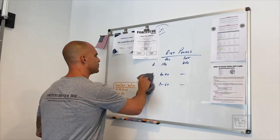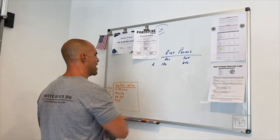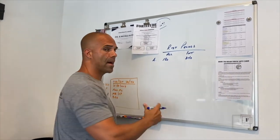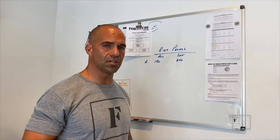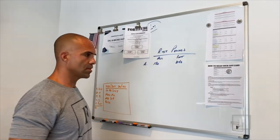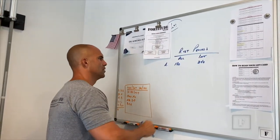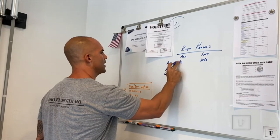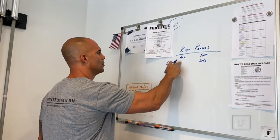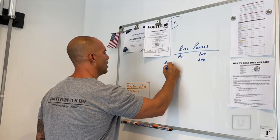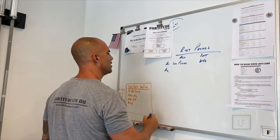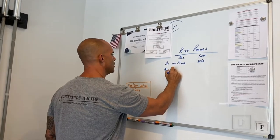Now in the A series or any series for that matter we have to understand the difference between single station and double station exercises. So let's say we have A1 and A2. So let's say we're gonna do incline press and pull up.